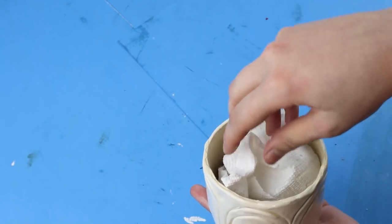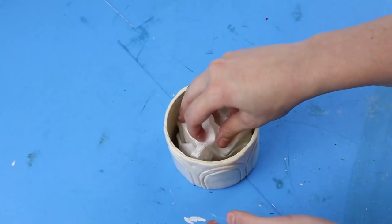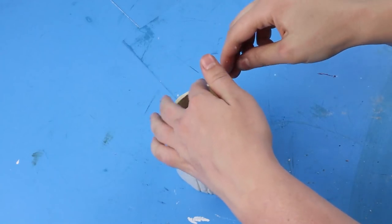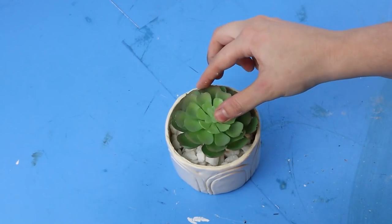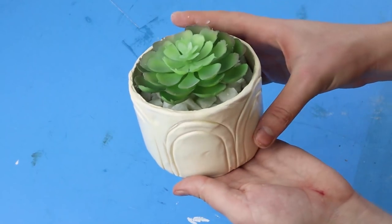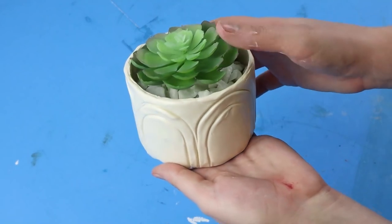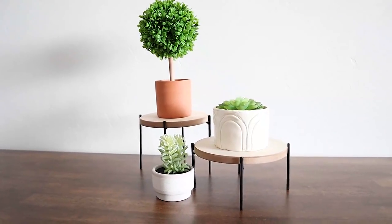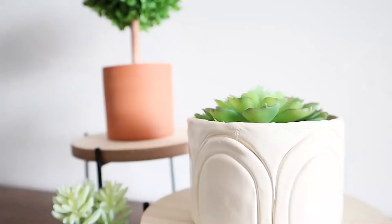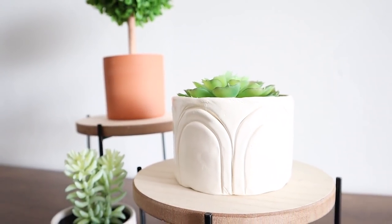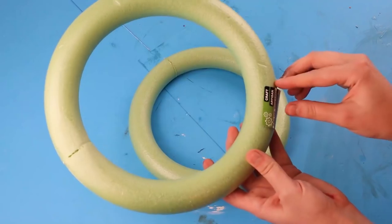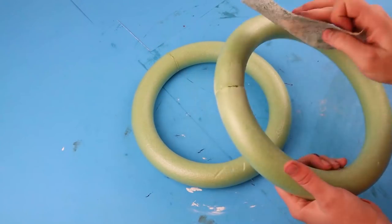To fill it, I just put some paper towels at the bottom to fill in some of that space so you don't have to fill the whole thing with rocks. And then I just use white rocks from Dollar Tree and a succulent.